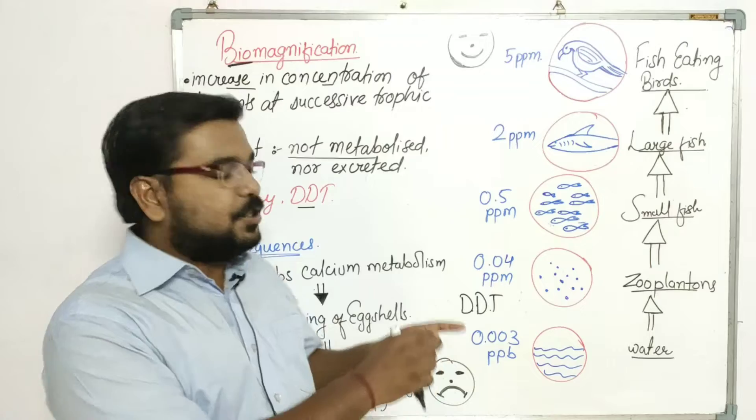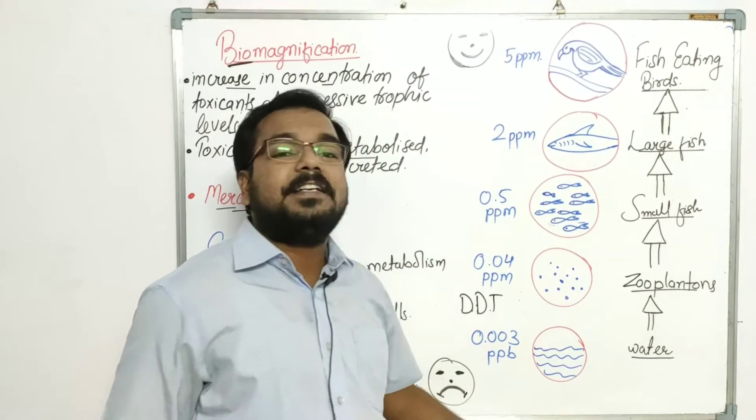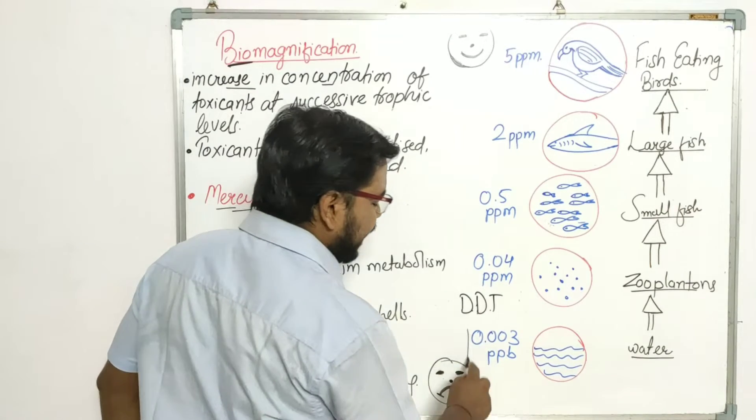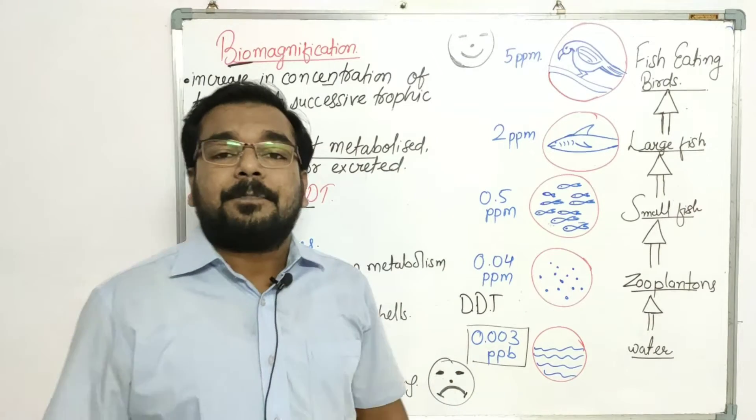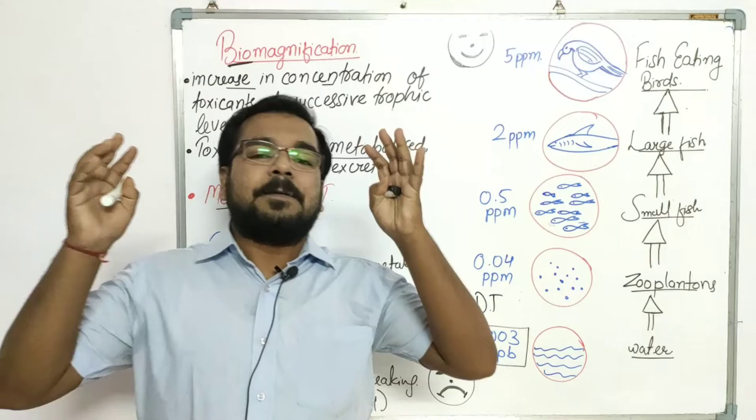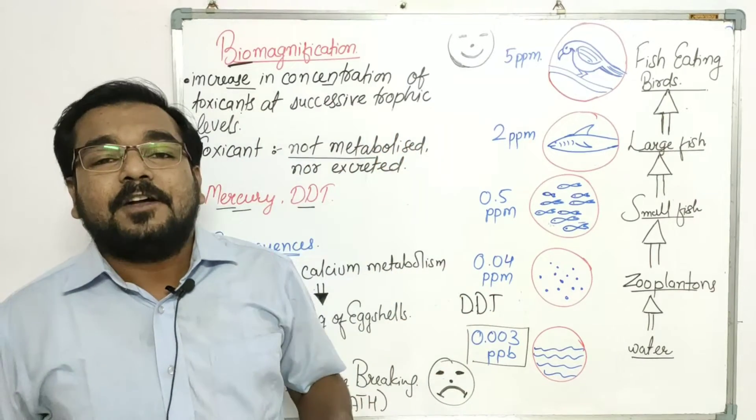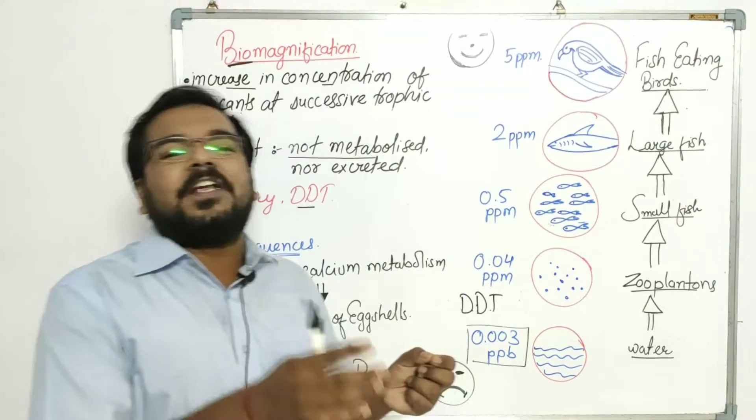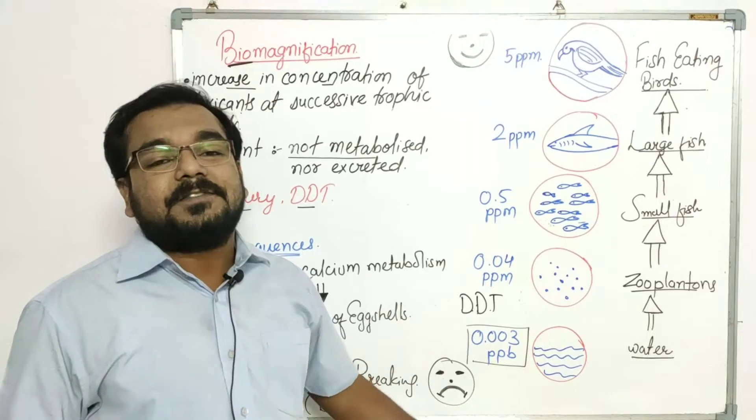So in this water, the DDT is runoff. It enters into the water body. If it has reached in the water body, then the concentration remains somewhat around 0.003 ppb, where ppb is parts per billion. This means that if you have a place, there are billion particles. So in this water, there will be 0.003 parts of your DDT in water.